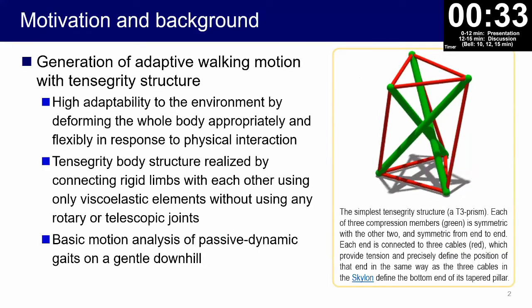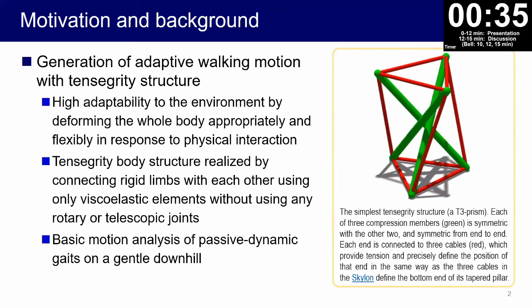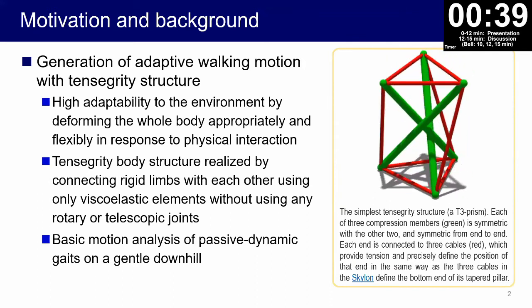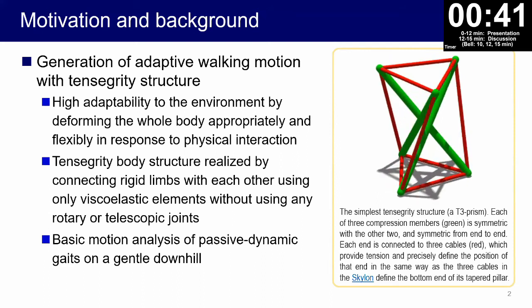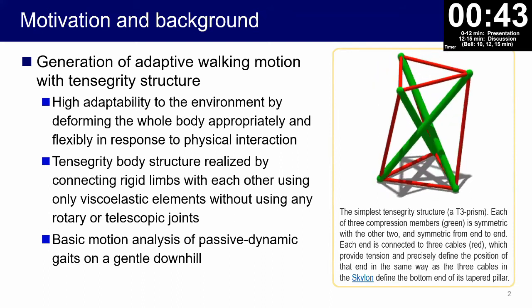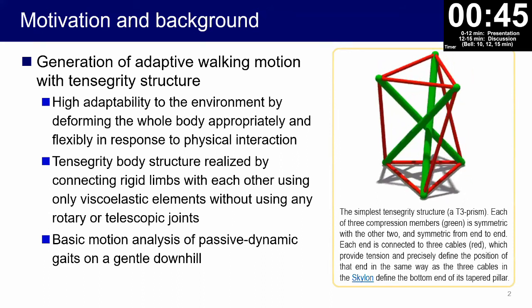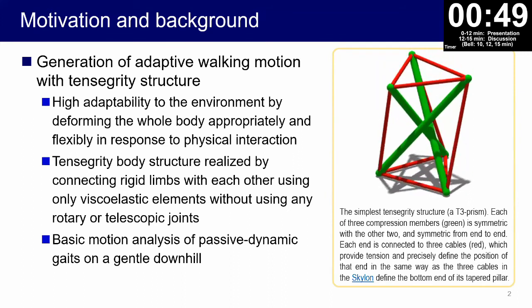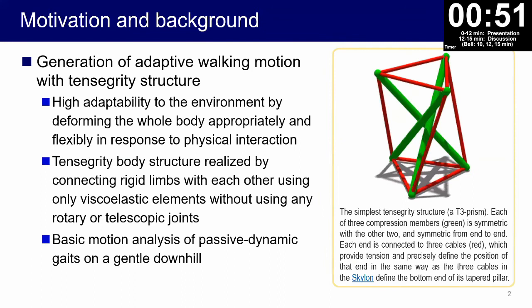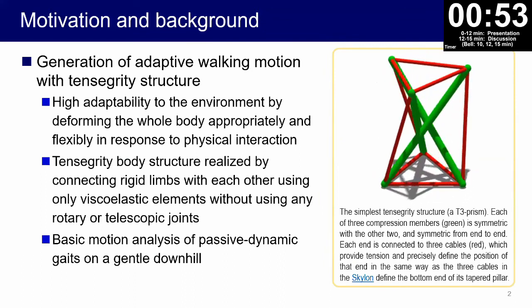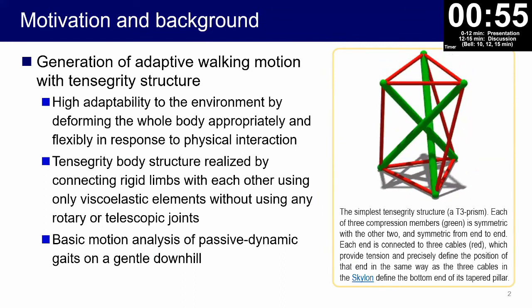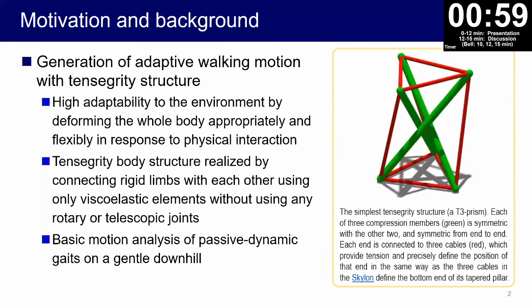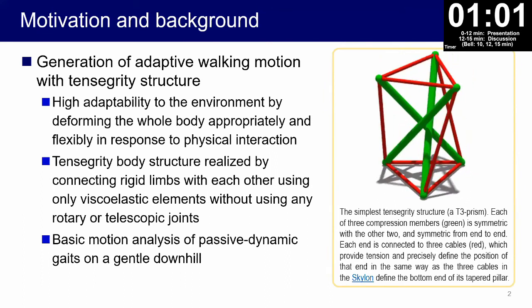In this paper we reconsider the embodiment of the ability for environmental adaptation from the perspective of deformable body structures. We investigate a new robot body shape and structures that creates high adaptability to the environment by deforming the full body appropriately.